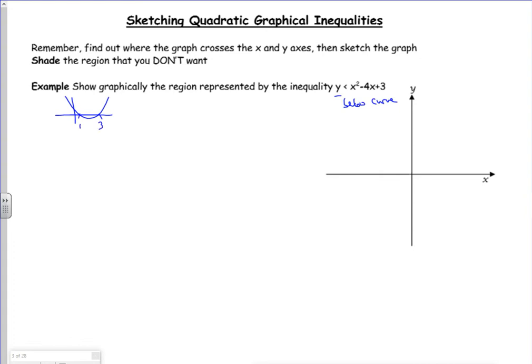And a 3 there as a crossing point because that's straight off your calculator. Now then, I've got to think about what I want here. So I want less than, so it's going to be a dashed line.